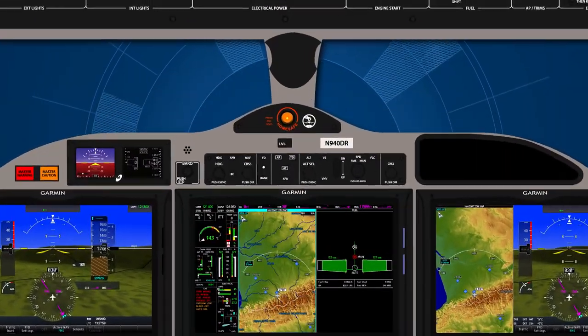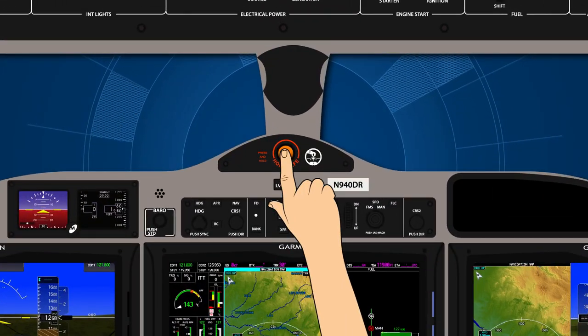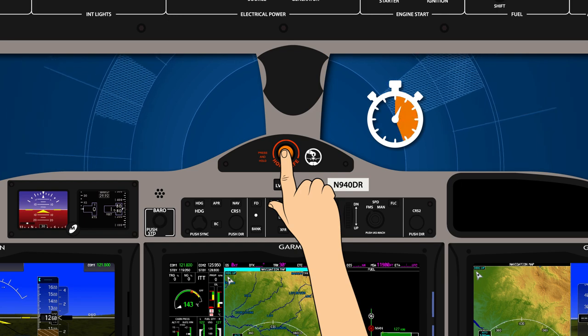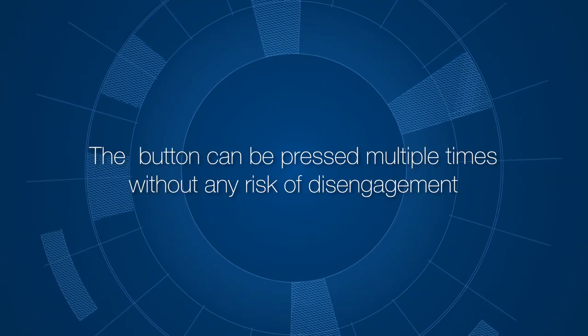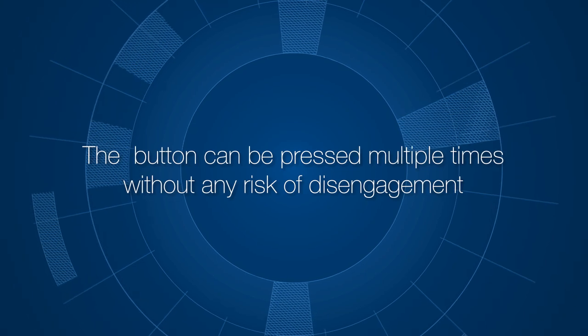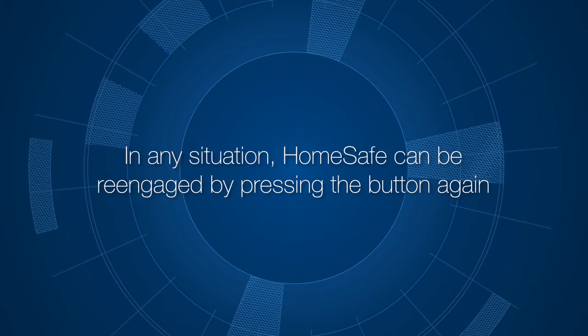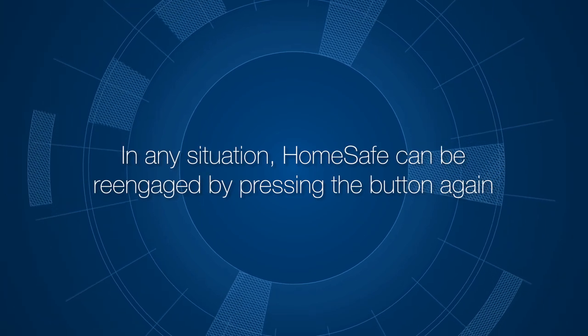To activate the system, press and hold the orange button in the cockpit for approximately two seconds. The button can be pressed multiple times without any risk of disengagement. In any situation, HomeSafe can be reengaged by pressing the button again.